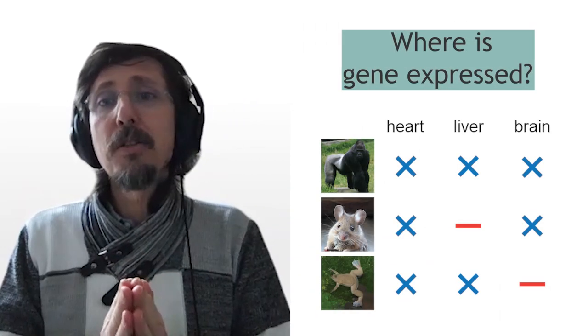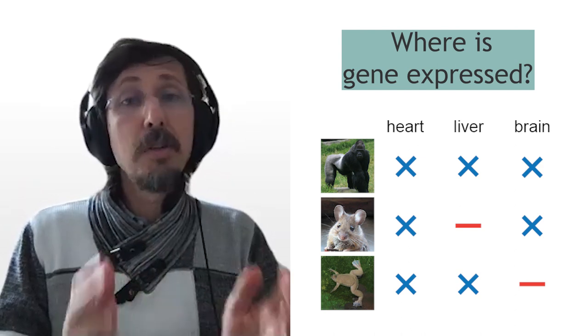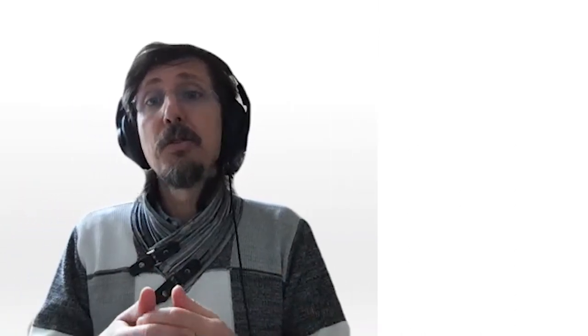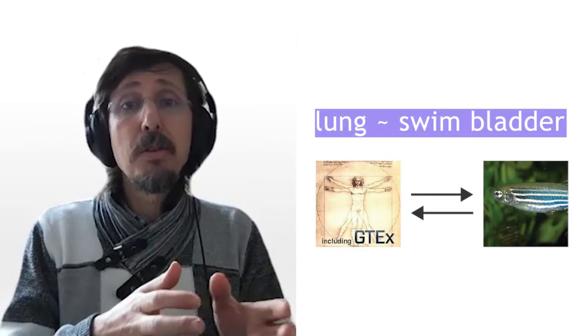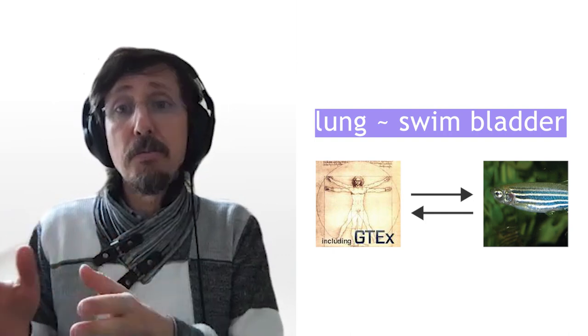Another key difference is that BG allows automatic comparison of expression between genes, even from different species. Being able to compare expression data between species is essential to study gene evolution, but also in biomedical applications to determine the functional importance of the expression localization of a gene. This is possible because we have curated relations of anatomy and homology between species, so that we can determine that expression information in, for example, the human lung is comparable to expression information in the zebrafish swim bladder.